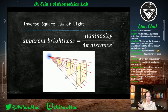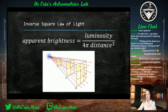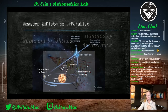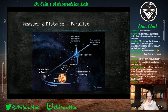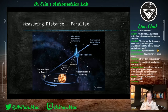Procyon and Betelgeuse have the same apparent brightness, but just by looking at them we don't know that Betelgeuse is actually brighter. You need to calculate the distance first before you can figure out the luminosity, knowing that light follows the inverse square law. One of the ways we measure distance is through parallax — something we touched on 20 classes ago.